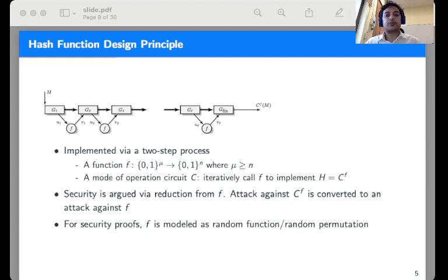The security argument for the hash function is established via a reduction from f. It is shown that an attack against H can be converted into an attack against f. Often, information-theoretic arguments are used where f is modeled as an ideal object like a random function or a random permutation.